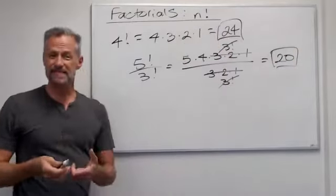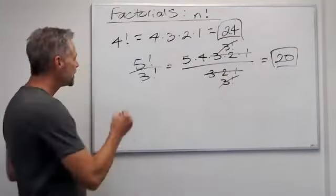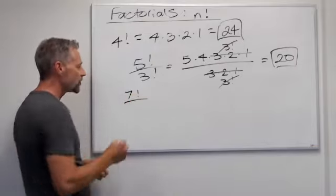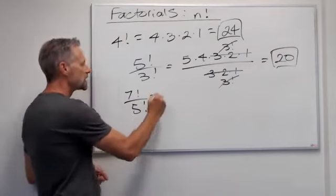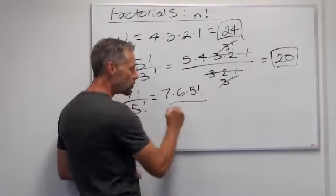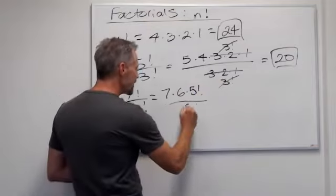And so it's really easy to reduce that way. So as another example, say I have 7 factorial over 5 factorial. I would just say, oh, that's 7 times 6 times 5 factorial over 5 factorial.